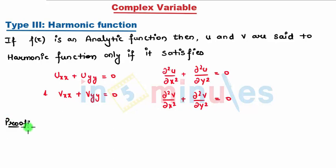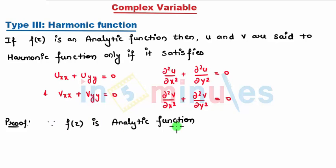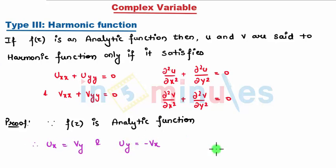Proof: Since f(z) is an analytic function in a region R of the z-plane, it obviously satisfies the Cauchy-Riemann equations: u_x = v_y (first equation) and u_y = −v_x (second equation). By using these two equations we are going to differentiate — the first with respect to x and the second with respect to y.